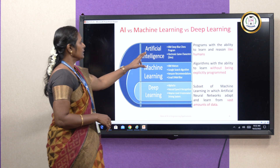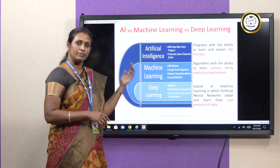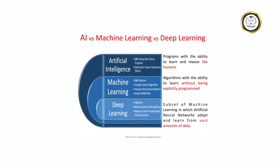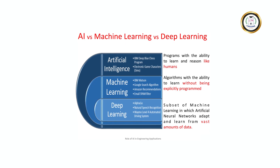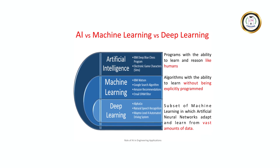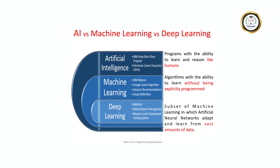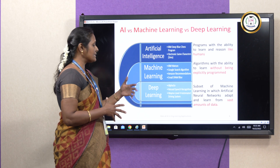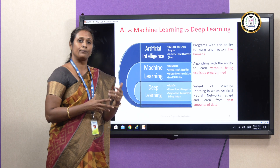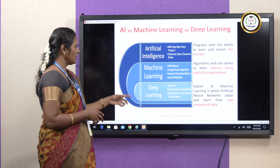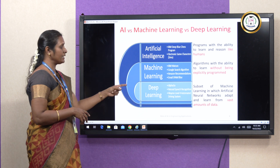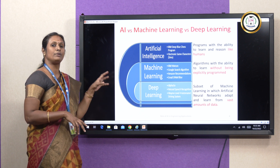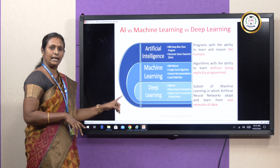AI mimics human behavior — we can develop intelligent machines using AI. Machine learning means without explicit programming we can make machines learn. Deep learning, with large amounts of data, is exclusively used for computer vision, image processing, and object detection. Deep learning and machine learning are all subsets of AI, and all AI applications could be achieved through ML and DL.